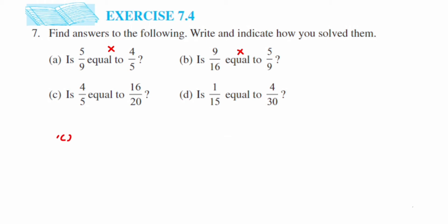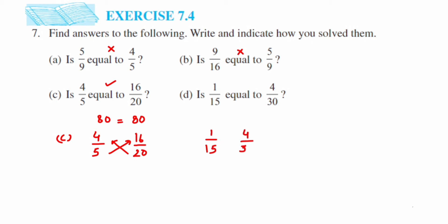I'll also show you cross multiplication so that if this question comes for one mark you can do it immediately. For 4/5 and 16/20: cross multiply — 20×4 is 80 and 5×16 is also 80, so these two fractions are equal. The last one is 1/15 and 4/30. Cross multiply: 30×1 is 30 and 15×4 is 60. Since 30 and 60 are not equal, these fractions are not equal.